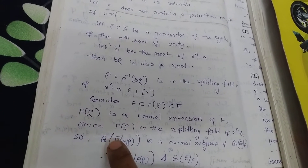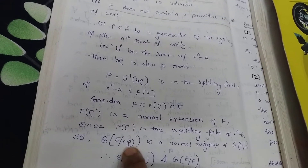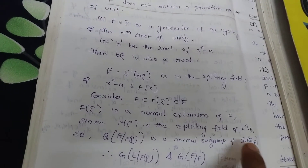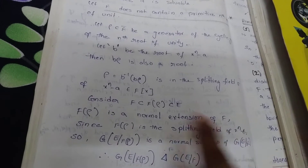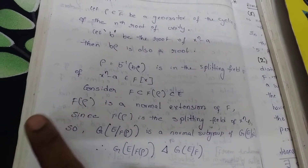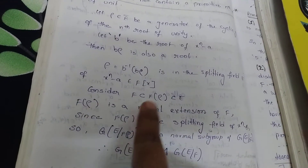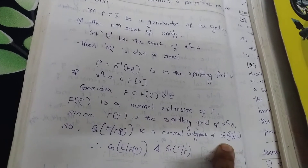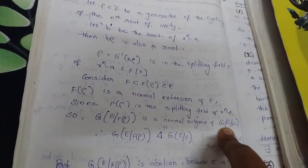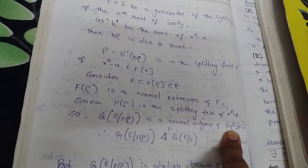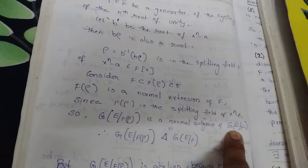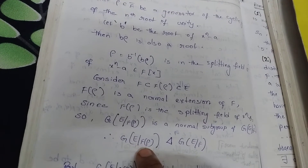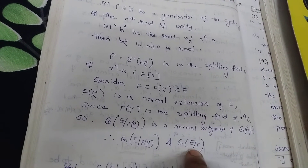By the automorphism argument, G(E/F(ρ)) is a normal subgroup of G(E/F) — this has already been proved. Since F(ρ) is a normal extension of F, G(E/F(ρ)) is a normal subgroup of G(E/F). This follows from the fundamental theorem of Galois theory, which we proved in a previous topic. Let us write the normal subgroup symbol: G(E/F(ρ)) ⊴ G(E/F).